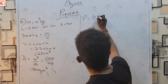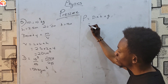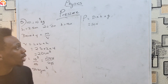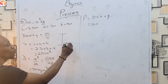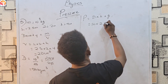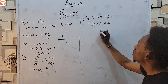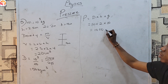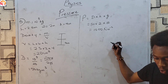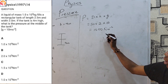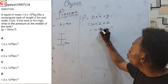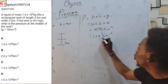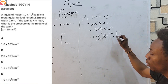Now I can solve for pressure. P = ρhg, where density = 50, h = the middle of the tank = 4/2 = 2 meters, and g = 10. So P = 50 × 2 × 10 = 1000 N/m². Expressing in standard form: 1 × 10³ N/m², which is option D. The steps are very easy.